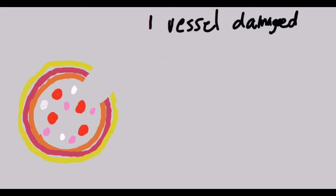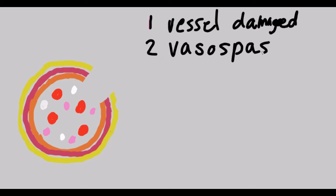The second thing that your blood vessels are going to do is something called a vasospasm. That is when the blood vessels constrict to try and decrease the blood flow. The smooth muscle layer we talked about before is going to constrict and narrow the blood vessel, allowing less blood to come out because the diameter of the blood vessel gets smaller. So the vasospasm hopefully decreases the blood flowing out of the vessel because it becomes narrower.